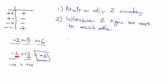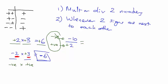Say you're doing minus ten divided by two. You've got a negative divided by a positive. Positive and negative always gives you a negative, so your answer is going to be negative. Then ignore the signs: ten divided by two is five. So the answer is minus five.